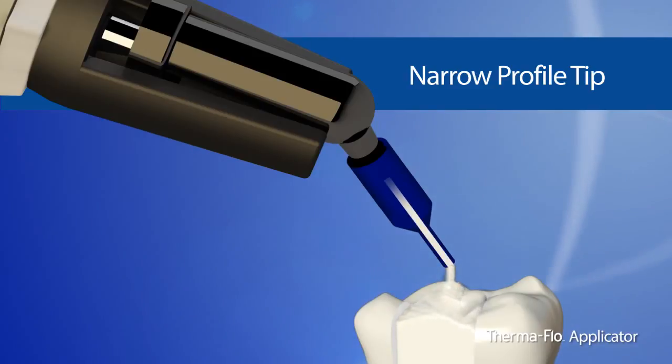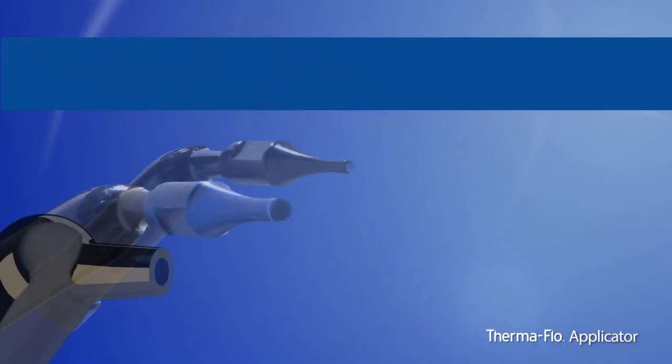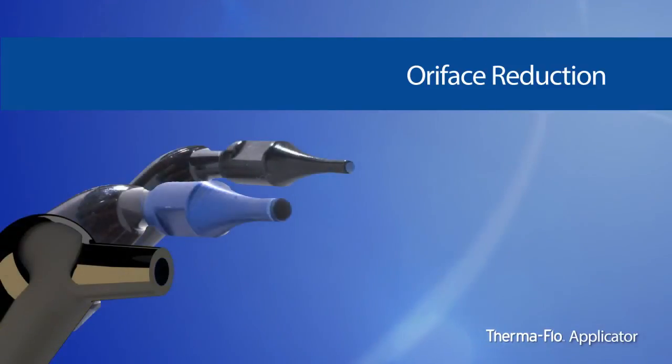Two times and four times orifice reduction enables the dentist to use considerably less composite with little manipulation required to place the material, especially convenient when completing micro restorative procedures.